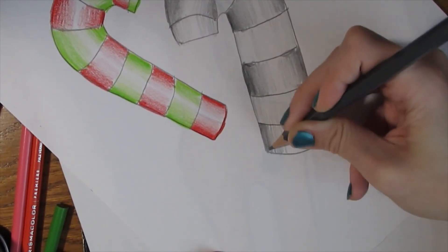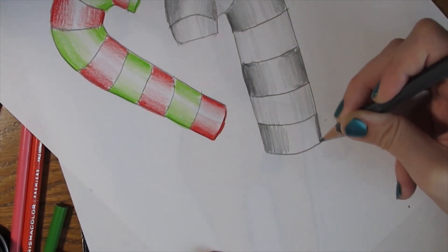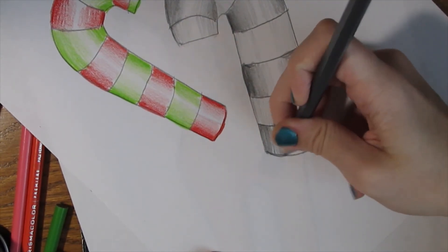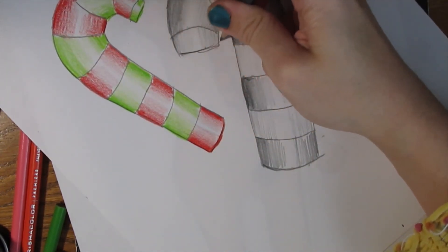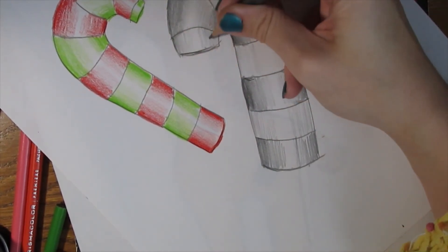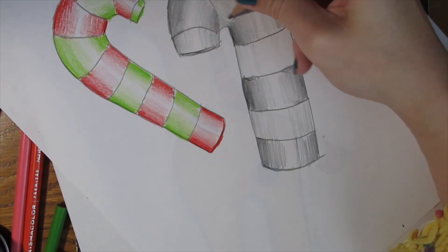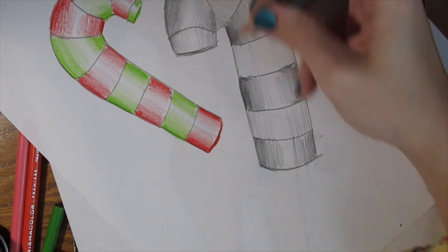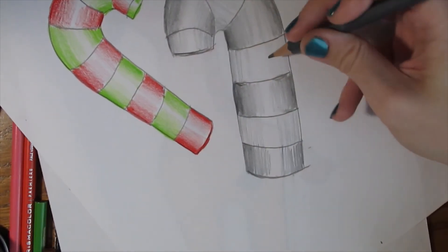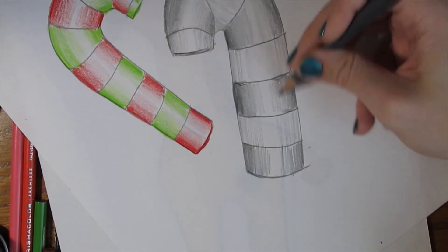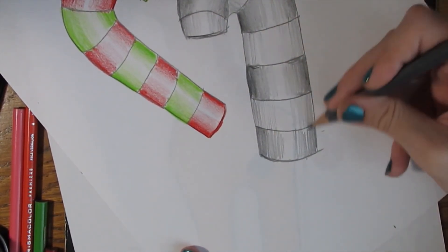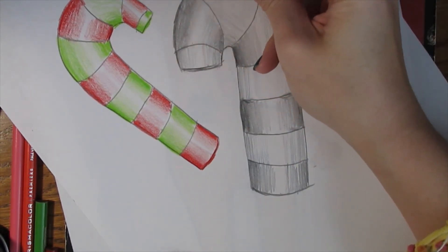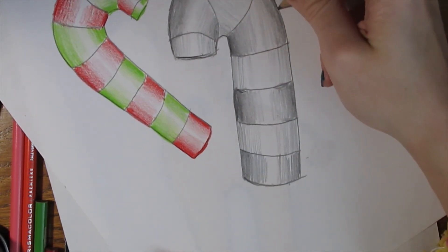I'm almost done with this candy cane here. I'll just go ahead and darken up my edges. There are some areas where I want to go back in and touch it up and that's fine - artists do that all the time. If I didn't get it quite the way I wanted at first, I can always go back. That's something I want you to remember. I'm gonna make these lines just a little bit more definite.